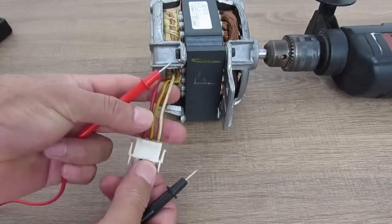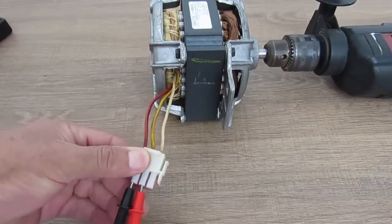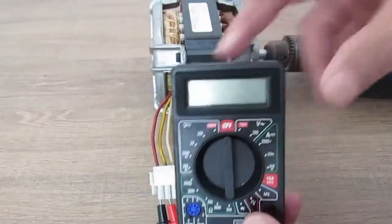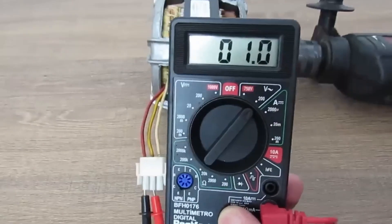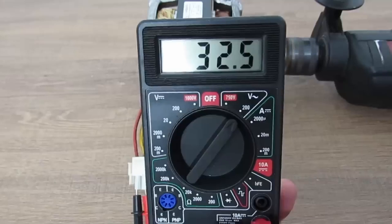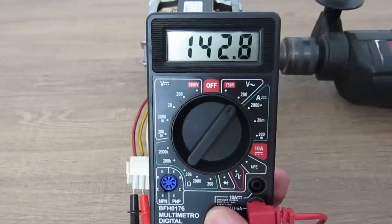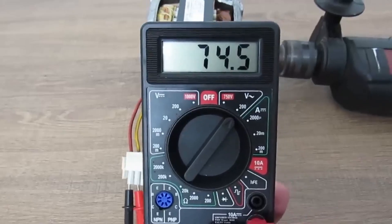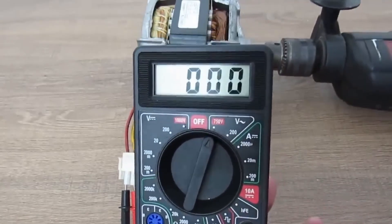I have three wires here. I will initially connect them to the first two. And let's see the voltage we can obtain. I will leave it here on the scale of up to 200 volts. Yes, it went beyond 200 volts. I will change it to the scale of up to 750 volts.